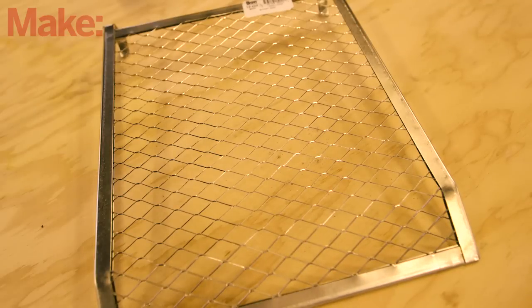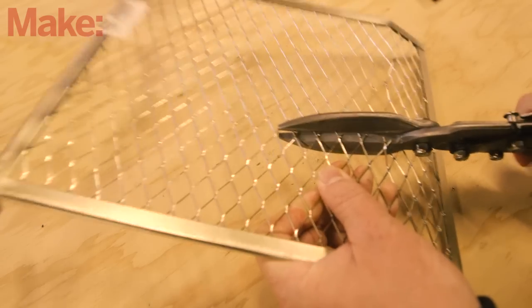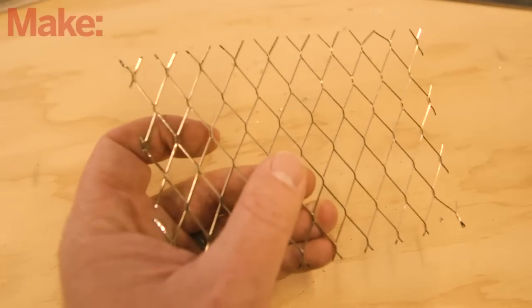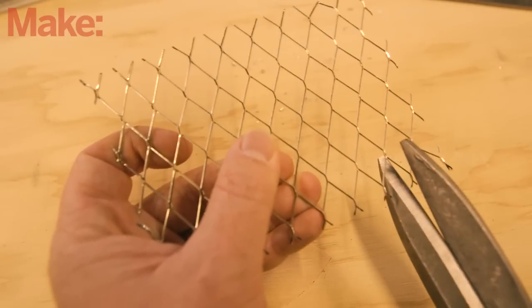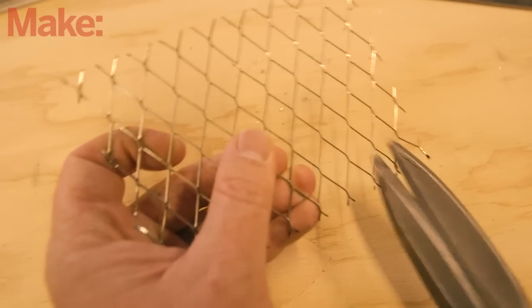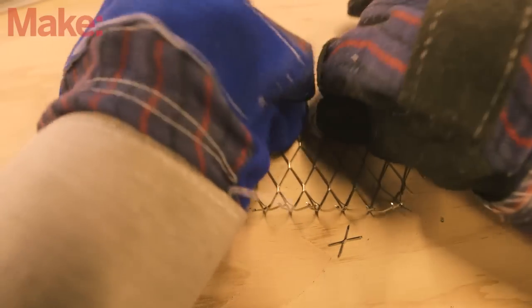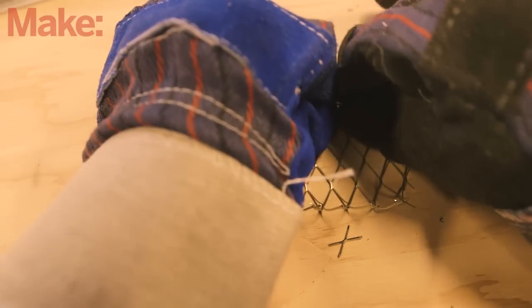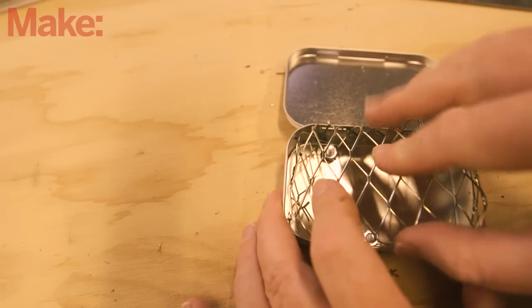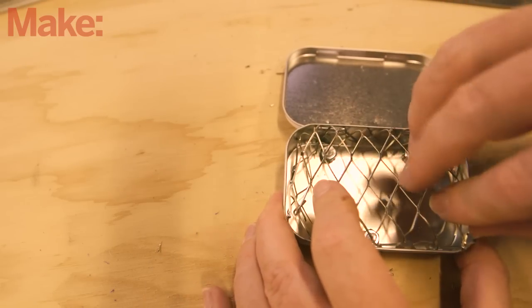Next we'll make the fuel support mesh. Use tin snips to cut a 13 centimeter by 9.5 centimeter square from the painter's mesh, then cut a two centimeter square from each corner. Fold the four sides down 90 degrees so it forms an open box shape, then fit it into the large tin so the folded sides support the mesh.